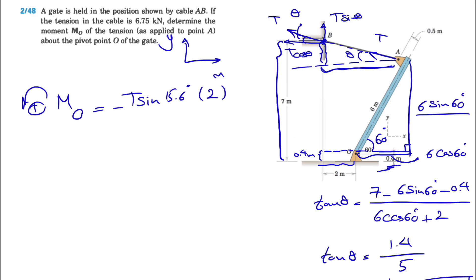From the question we know that T is 6.75 kilonewtons, so there's no unknown left. Plus we have the moment of T cosine theta, and since it's counterclockwise it will be positive: T cosine 15.6 degrees times the distance from O to B, which is basically 7 minus 0.4.